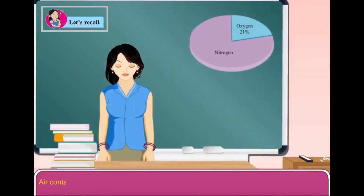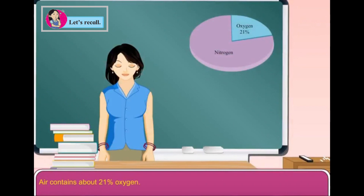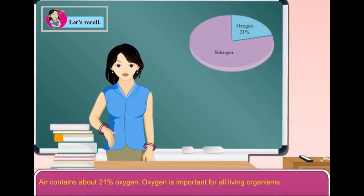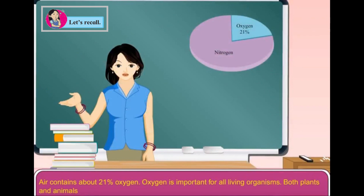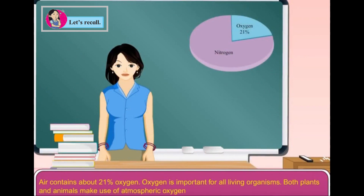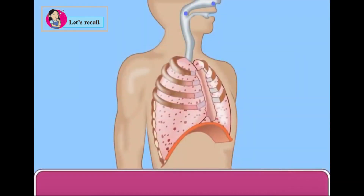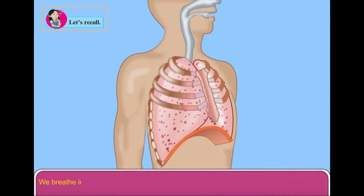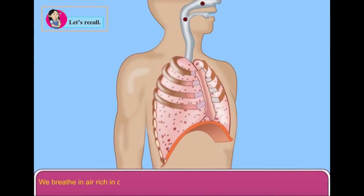Air contains about 21% oxygen. Oxygen is important for all living organisms. Both plants and animals make use of atmospheric oxygen in the process of respiration. We breathe in air rich in oxygen.